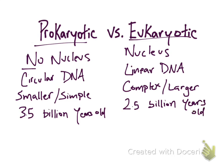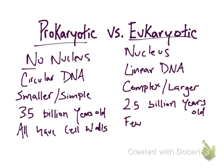Another structural difference between the prokaryotic and eukaryotic cells is that prokaryotic cells all have cell walls, while in the eukaryotic, only a few have cell walls — such as the plant cell, which is a eukaryotic cell. The plant cell has a cell wall.